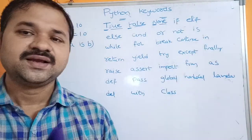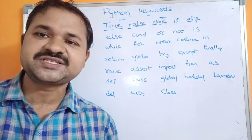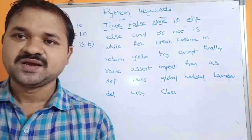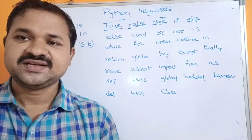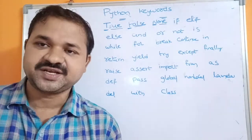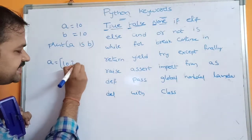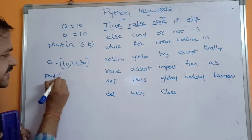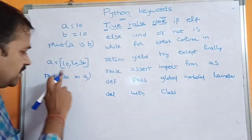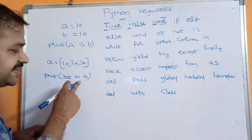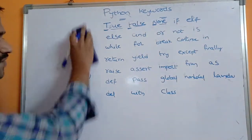The next keyword is in. It is useful to check whether an element is present in a collection or not. Collections in Python include list, set, tuple, and dictionary. If the element is present, it returns True; if not, it returns False. For example, if a = [10, 20, 30], then print(30 in a) outputs True, whereas print(300 in a) outputs False because 300 is not in the list.